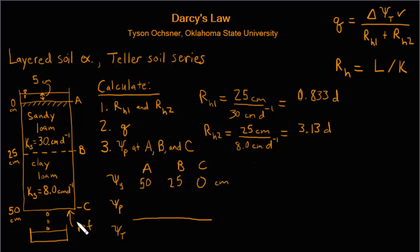Considering the pressure potentials, we can see at point C that the water is freely draining from the column and that tells us that that pressure potential is 0 or is equivalent to atmospheric pressure. At point B we actually can't determine the pressure potential yet. We'll come back to that. And at point A we see that there are 5 centimeters of water ponded on the surface. So we have a positive pressure of 5 centimeters. So then the total pressure potential at A is 55 centimeters and at C is 0 centimeters.